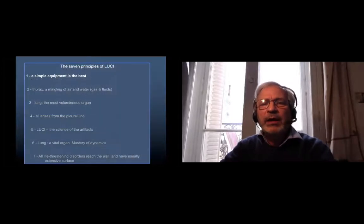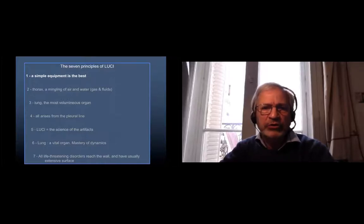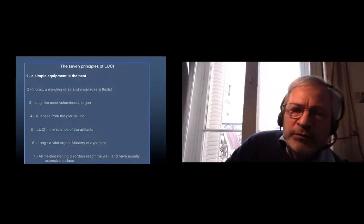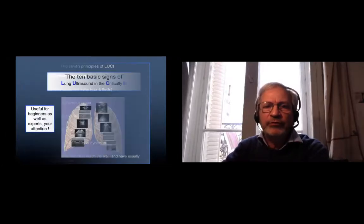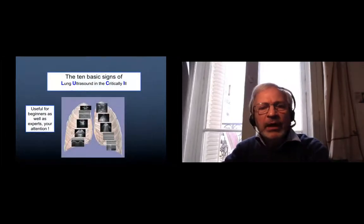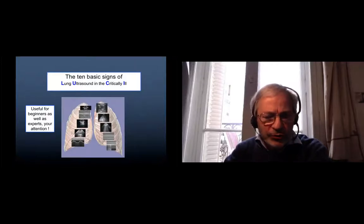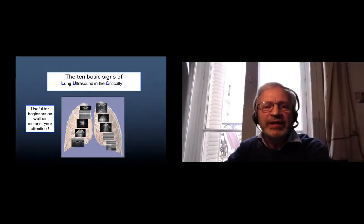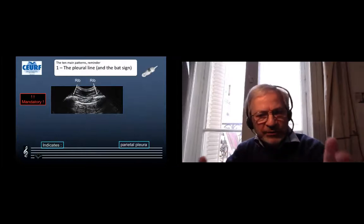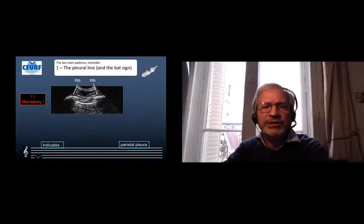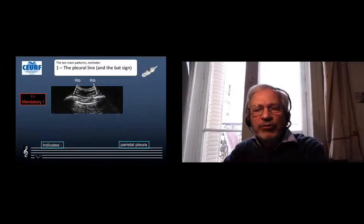Let's be short. In lung ultrasound in the critically ill, that is LUCI for making it short, we have seven principles. I remind the first one: a simple equipment is the best. We will remind for the beginners but also for the experts the basis of LUCI, that is the 10 basic science. I know I speak mostly to cardiologists so we will be focused on what is interesting for them. This is the pleural line.